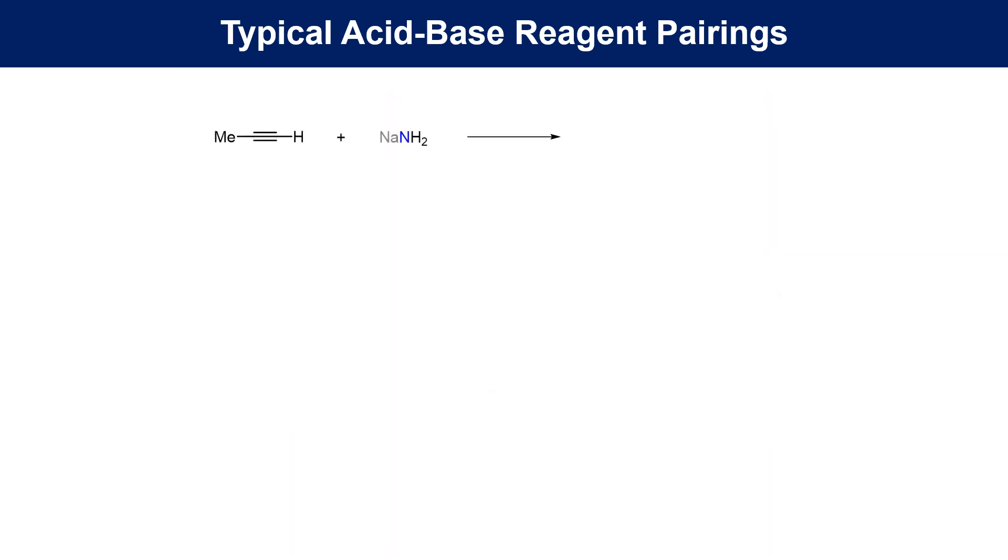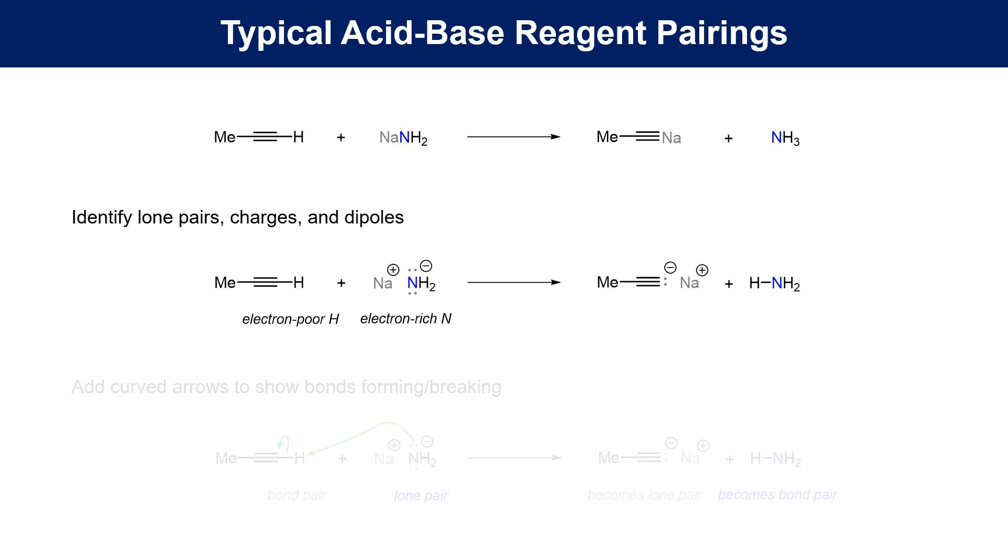In this third example, a terminal alkyne is treated with sodium amide. The result is the sodium salt of the alkyne along with ammonia. The electron-rich center is readily identified as the anionic nitrogen atom while the alkyne proton is known to be weakly acidic. The bond forming arrow therefore begins at nitrogen and goes towards the alkyne proton. The bond breaking arrow shows the sp hybrid carbon picking up the electrons from the CH bond that breaks.